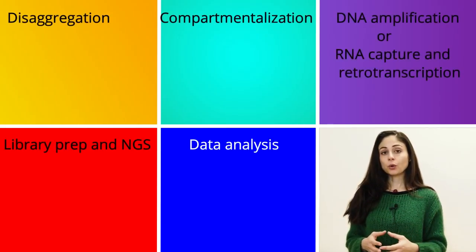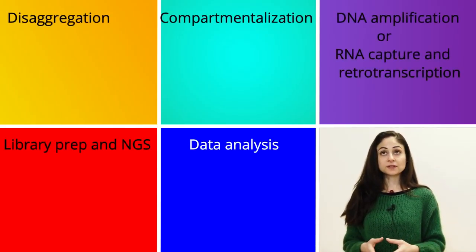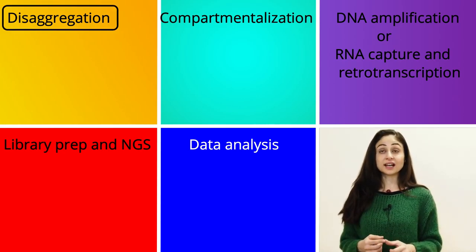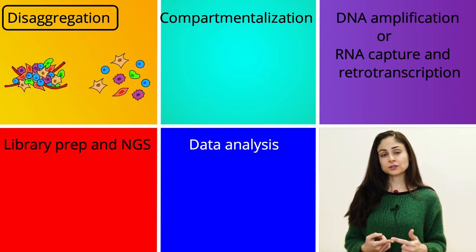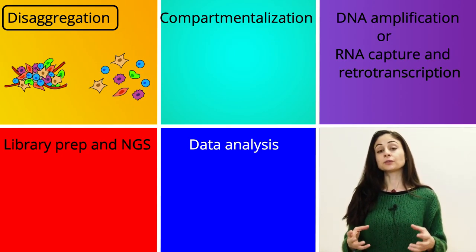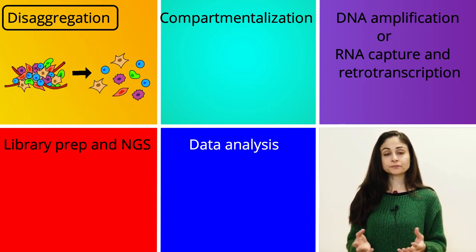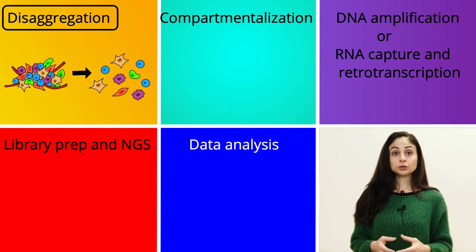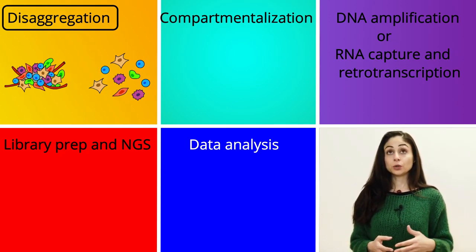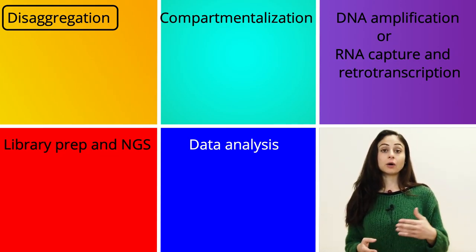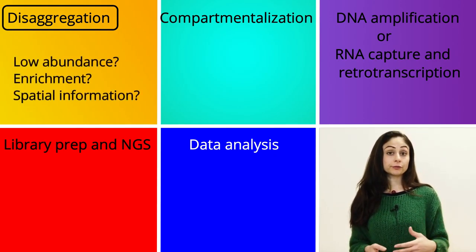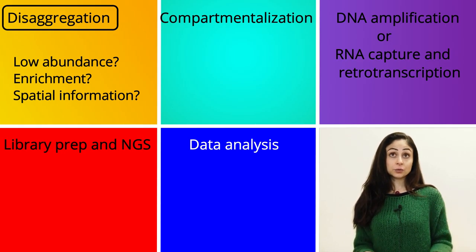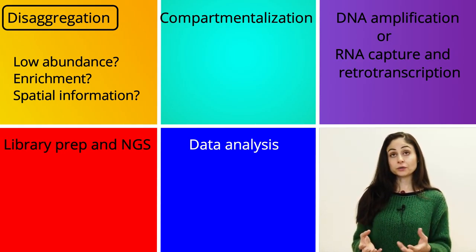Let's see how a single-cell experiment is performed from a technical point of view. There are basically five steps. When starting with a complex tissue or a liquid tissue such as a liquid biopsy, the first thing we want to do is to disaggregate or isolate the cells of interest to be analyzed, because the starting point for every single-cell analysis is to obtain a single-cell suspension. The specific approach will depend on how abundant the cells are in our tissue, whether we want to perform a pre-analysis enrichment, or if we want to preserve spatial information.